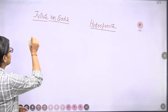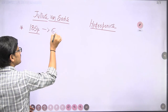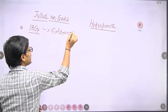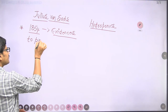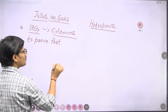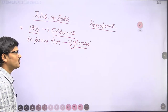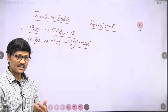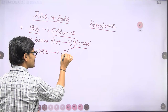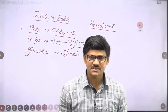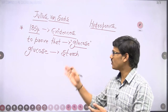His second contribution: in the year 1854, Julius von Sachs provided experimental evidence that during photosynthesis, glucose is produced as the end product. Further, he stated that this glucose is later converted into another form called starch. Plants store food in the form of starch, while animals store food as glycogen.